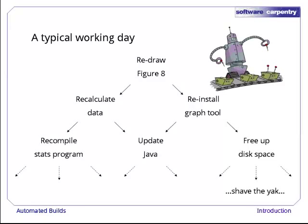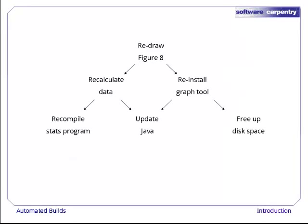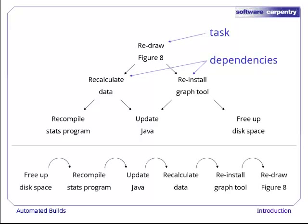Until eventually it finds itself saying, right, so I need to shave the yak. We won't go that far with it though, not today. Instead, here's that set of jobs once again. We can think of this set as a graph — the things it needs to do, the tasks, are the graph's nodes, and the dependencies between the tasks are the graph's edges. Since the robot can only do one thing at a time, it needs to find an ordering on these tasks such that everything a given task depends on is done before it.